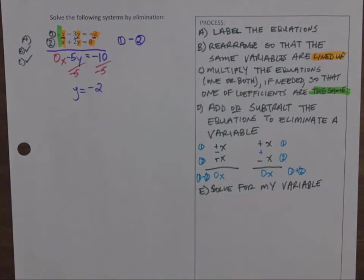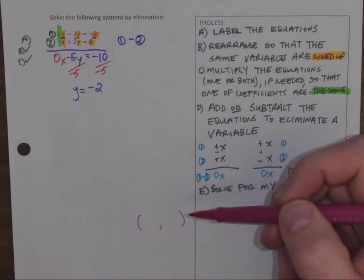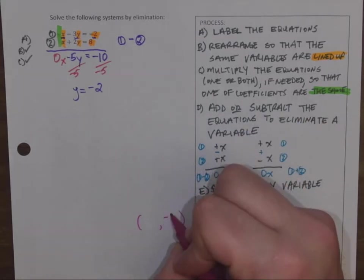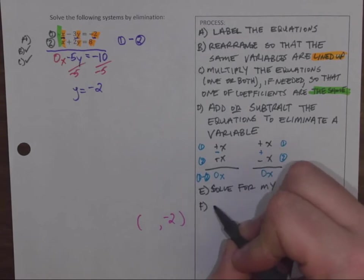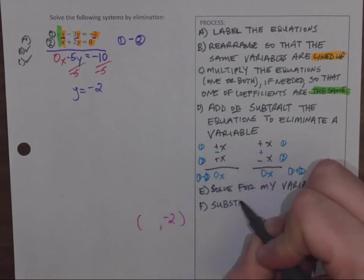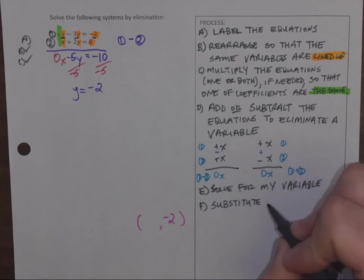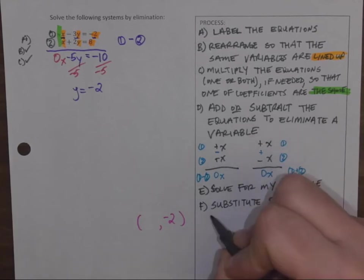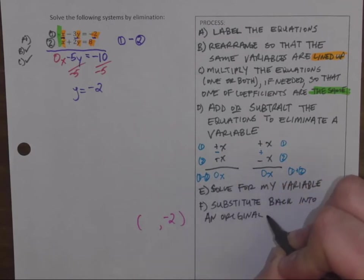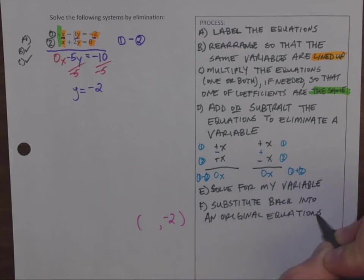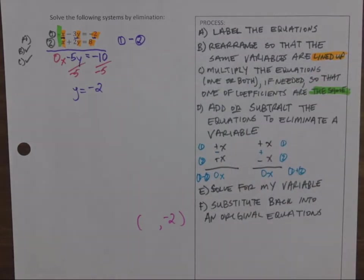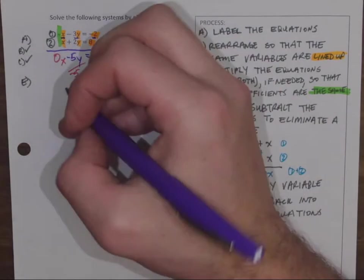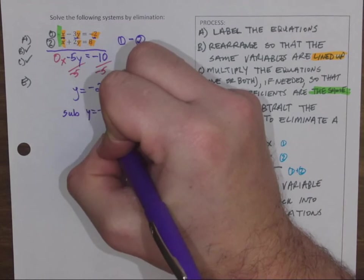Remember that that is an actual point. That is the Y coordinate of the point that these two lines intersect. Now I need to find my X. To do that, I'm going to substitute back into one of the original equations.